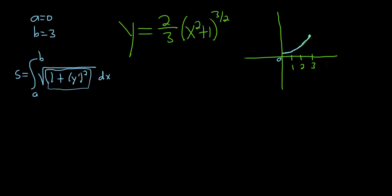Let's take the derivative. So y prime is equal to, we'll use the chain rule here. The three halves comes out front, so 3 halves times 2 thirds hangs out and we get x squared plus 1. And 3 halves minus 1 is really 3 halves minus 2 halves which is 1 half, times the derivative of the inside function which is just 2x.